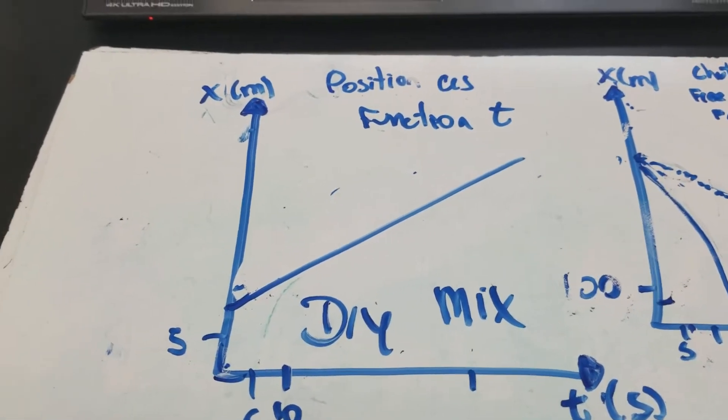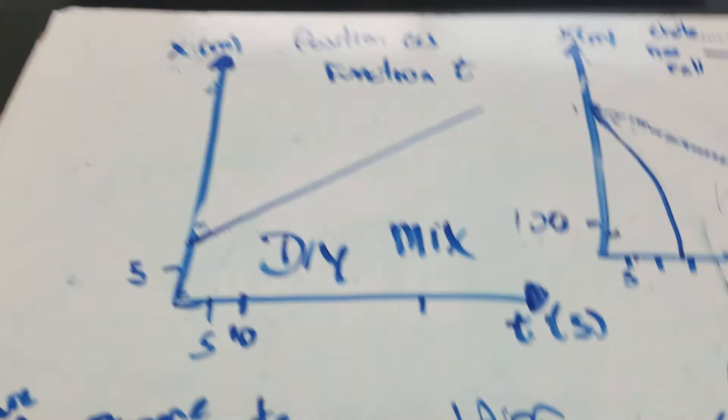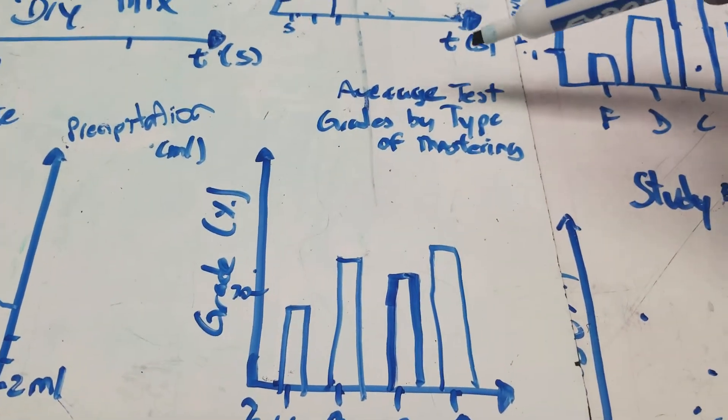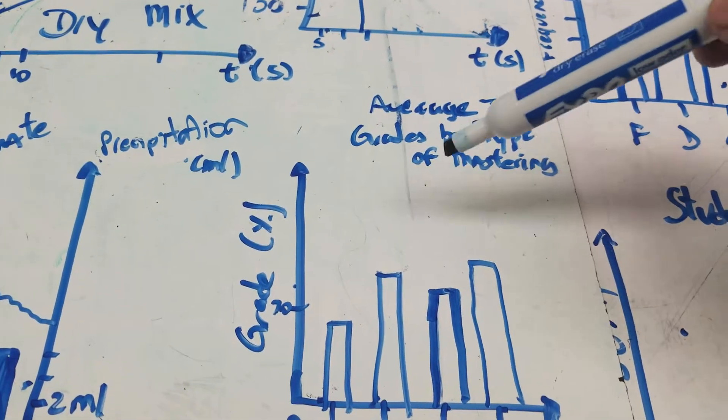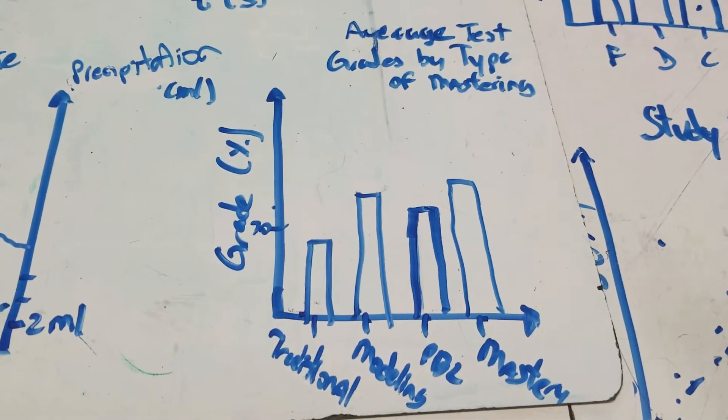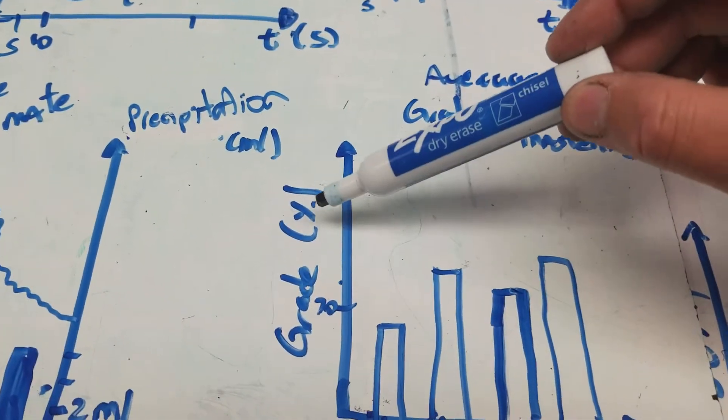But there's other useful types of graphs that you might end up using, too. For example, bar graphs are used a lot. So I have a bar graph over here. This one is representing the average test grades by type of mastering that a student takes. Now, these are invented data, but I'm just trying to show how it would look like. So, for example, this is the grade in percentage, and this is showing a 70.